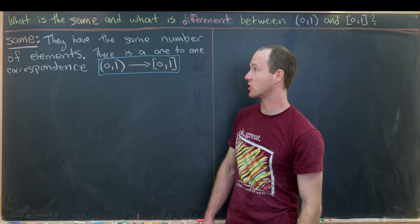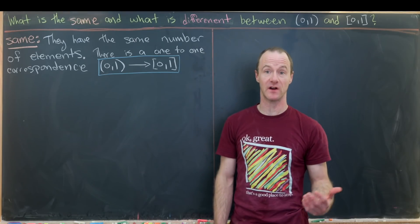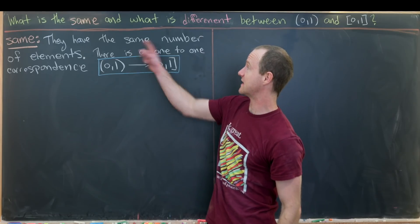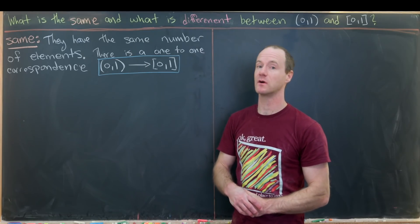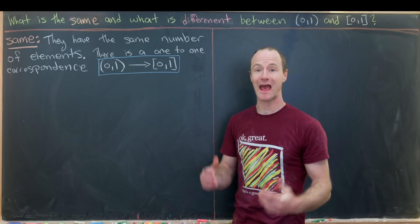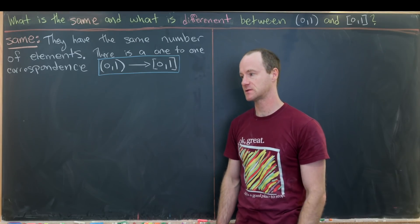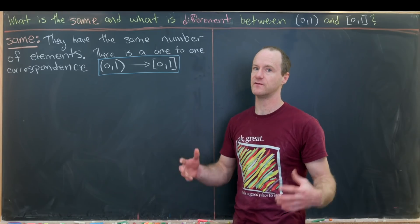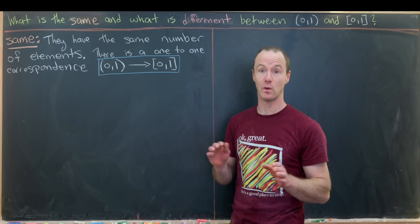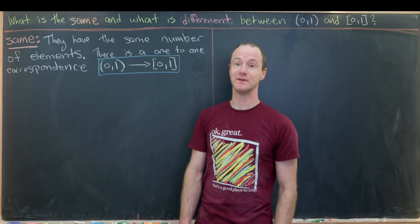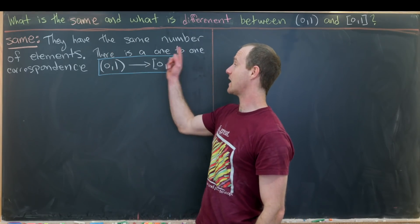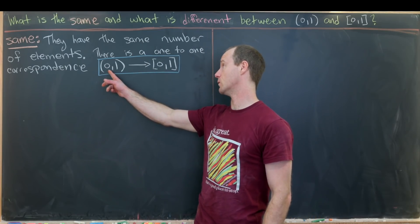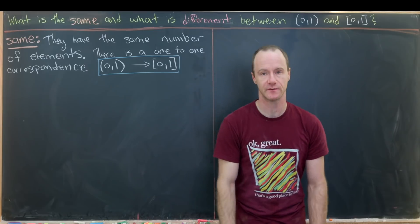So we'll first start off by describing how these sets are very similar to each other. And maybe the biggest similarity is that they have the same number of elements. So they both have an uncountable infinity of elements. But instead of proving that they both have an uncountable infinity of elements of the same cardinality, if you want to get really fancy about it, what we'll do instead is exhibit a one-to-one correspondence between the open interval (0,1) and the closed interval [0,1].